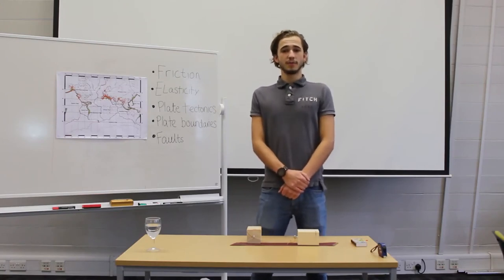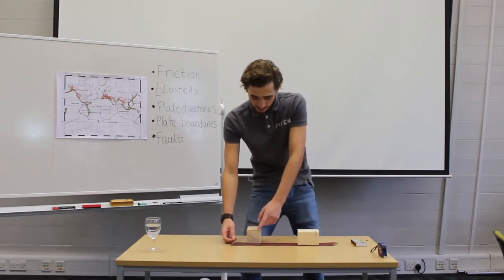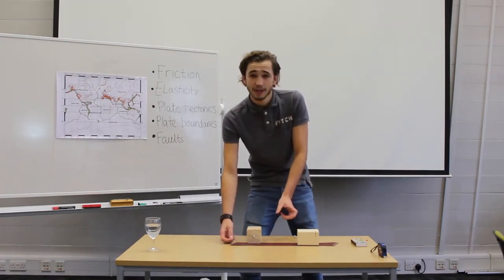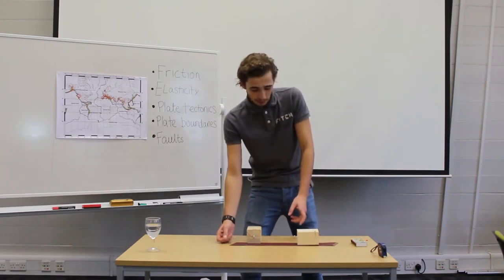So how did you get on with describing the energy flow for the system? As you pull the string, you're inputting energy into the system. This energy is then transferred and stored in the elastic band as it stretches. It's stored there as elastic energy. Eventually, the energy is released in the form of the block moving forwards.